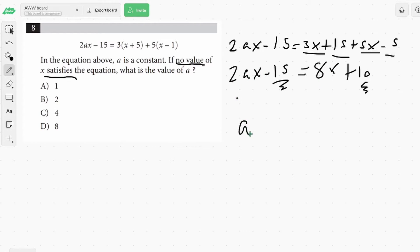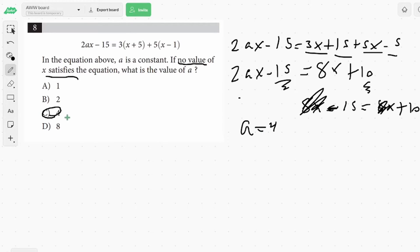So a would have to be 4, because if we got 4, it would be 4 times 2 is 8, and we get 8x and 8x, they'd cancel. If we look at some more, we'd have 8x minus 15 equals 8x plus 10. If you try to subtract an 8x from either side, it would just cancel, and you'd be left with minus 15 equals 10. We know that's not true. So we cancel the variable and what we're left with isn't true. So a equals 4. C is going to be our solution.